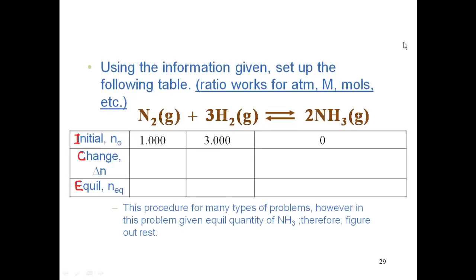Since I only have reactants and I have no products, which way does this reaction have to go to get to equilibrium? It's going to have to go to the right.